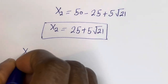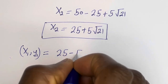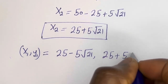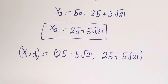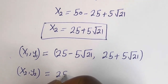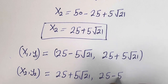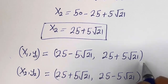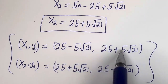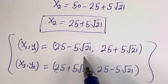Therefore our final answers are: (x1, y1) is equal to (25 minus 5 square root of 21, 25 plus 5 square root of 21), and (x2, y2) is equal to (25 plus 5 square root of 21, 25 minus 5 square root of 21). If you look at this, you will discover that the value of x1 is equal to the value of y2, and the value of y1 is equal to the value of x2. I hope you enjoyed the video. Thank you for watching. Please don't forget to like, share, comment, and subscribe to my channel. Bye.